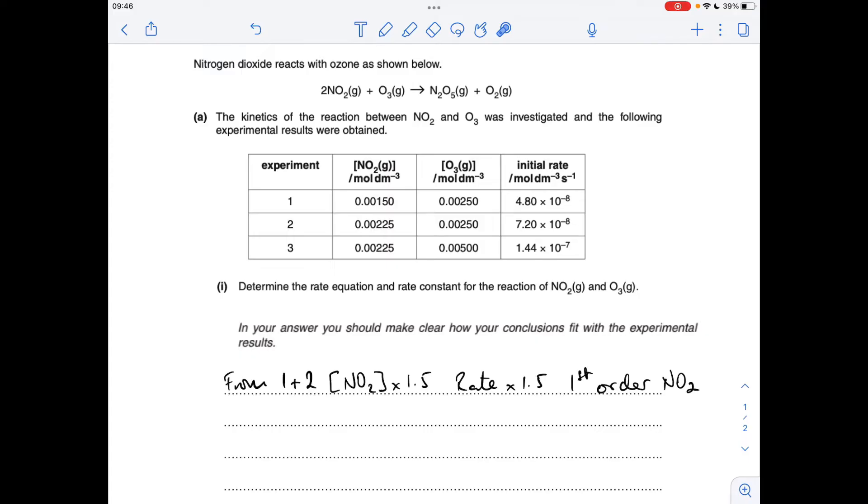So rather than writing a load of waffle, you can literally just get it all in that line there. So from 1 and 2, the concentration of NO2 is multiplying by 1.5, the rate times 1.5, first order for NO2.